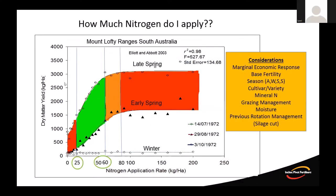What we're trying to do is get nitrogen on at the right rate to maximise response — utilising it at the steepest part of the response curve. Where the curve flattens, the cost of the nitrogen no longer gives an economic response per additional kilogram of dry matter. Elliott and Abbott's work in South Australia shows: less than 25 kg of N gave minimal response; the response rate drops off around 50–60 kg of N; and seasonal differences are clear — late spring, early spring, and winter responses all differ.